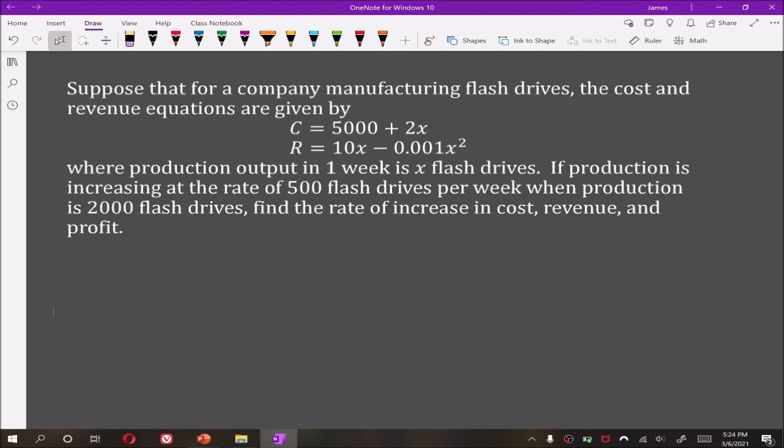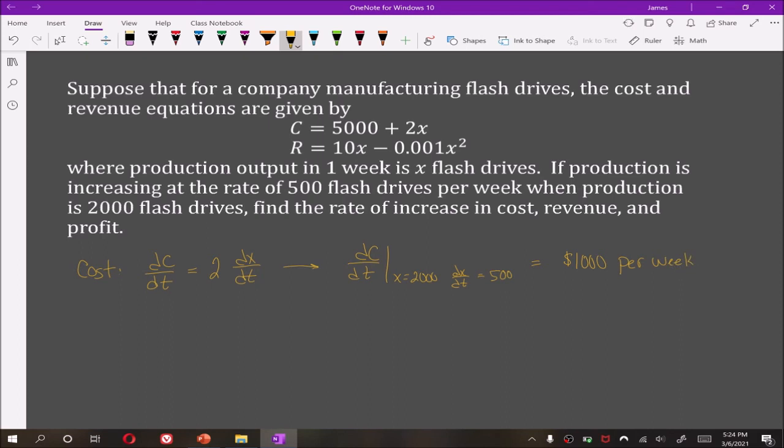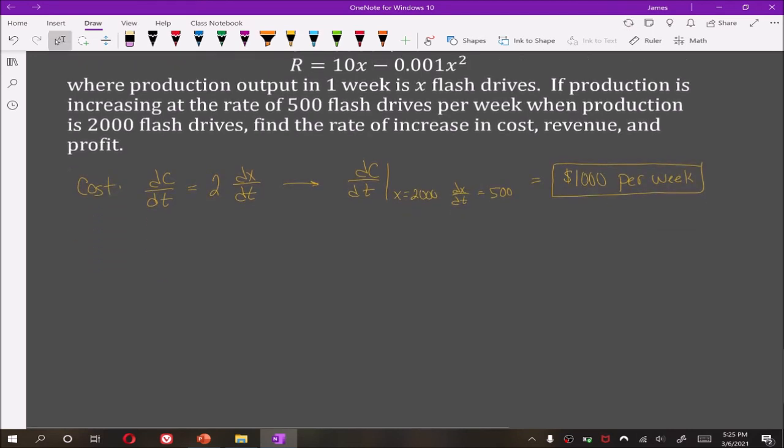So for cost, we have dC/dt is equal to 2 dx/dt. We wanted dC/dt evaluated when x is 2000 and dx/dt was 500. We get 2 times 500 so it's $1,000 per week. So cost is increasing at a rate of $1,000 per week.